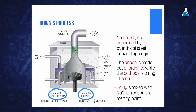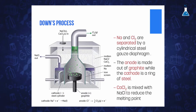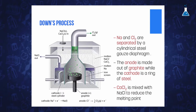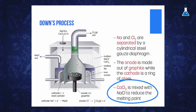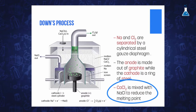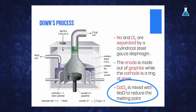The cathode ring goes around the anode. The electrolyte in the reaction is the molten sodium chloride, since the solid salt is a poor conductor. In order to lower the cost of production, calcium dichloride is mixed with sodium chloride, which reduces the melting point from 1073 Kelvin to 870 Kelvin.